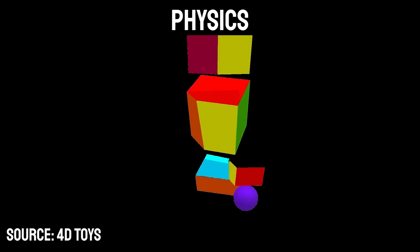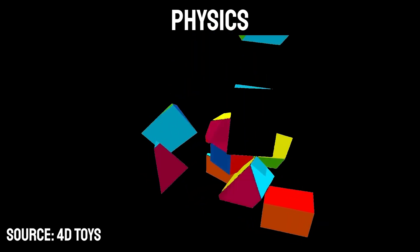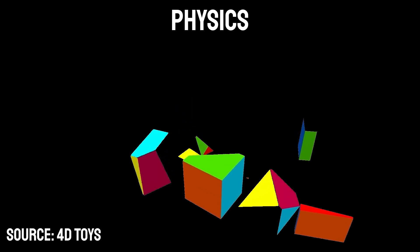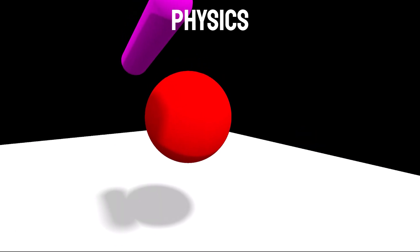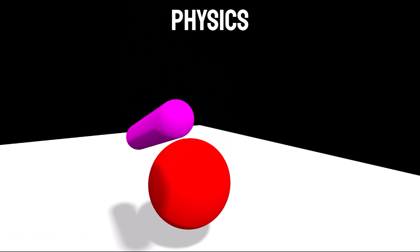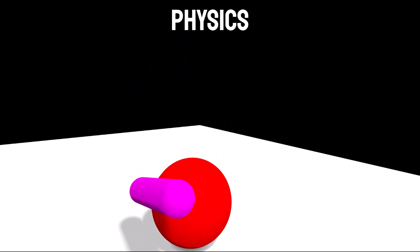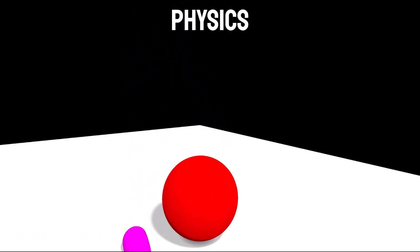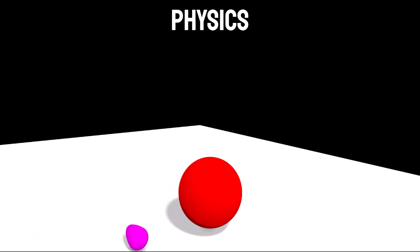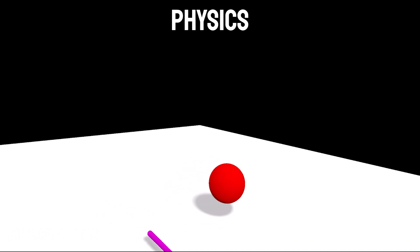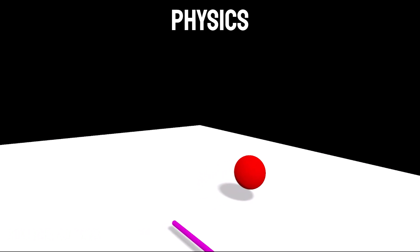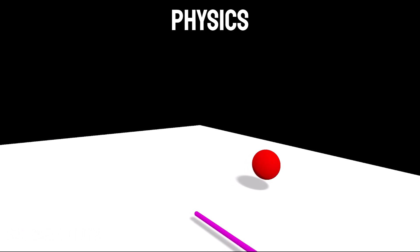Similarly for physics, we can see a clip from the game 4D Toys here. As we can see, the 4D cube and hypersphere appear to be floating above the 4D plane, whereas the ground truth is that they have just moved into the fourth dimension and are still colliding with it in the fourth dimension.